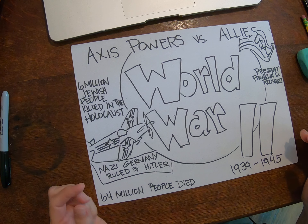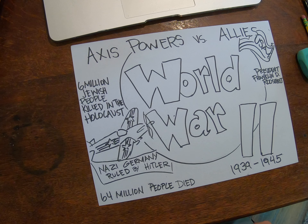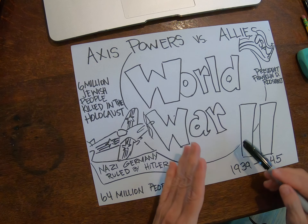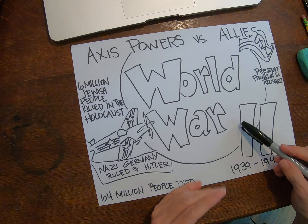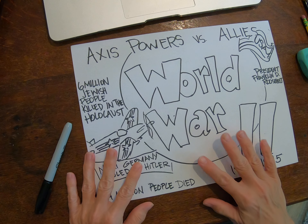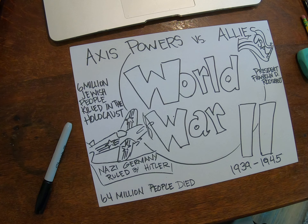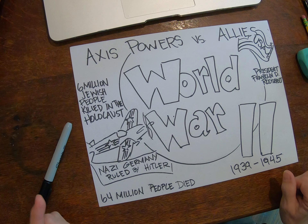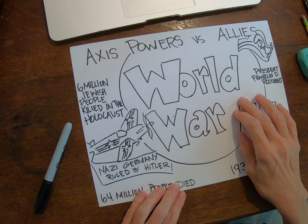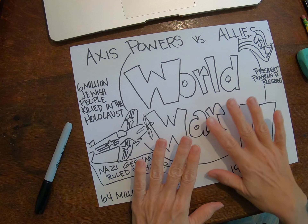I might have added that the United States entered the war in 1941 when Japan bombed Pearl Harbor — that could have been another fact. Once I had all my facts and graffiti lettering done, I added a couple of pictures to make it look more interesting, like my flag and my plane. I could also add a world globe since it's World War II.